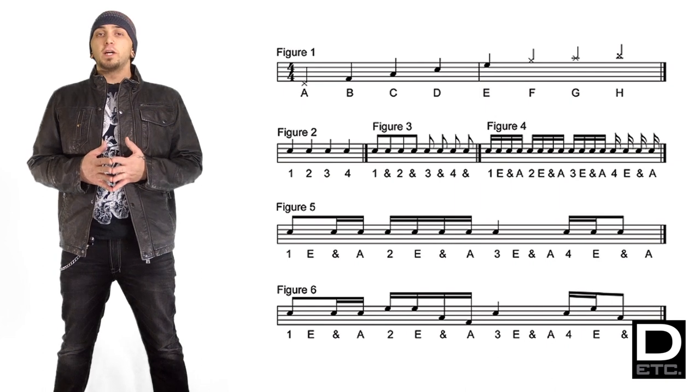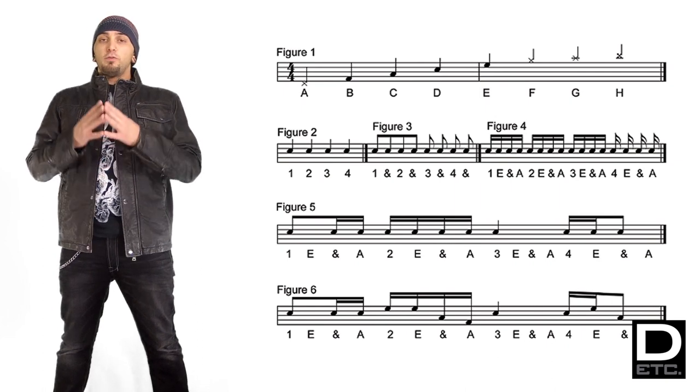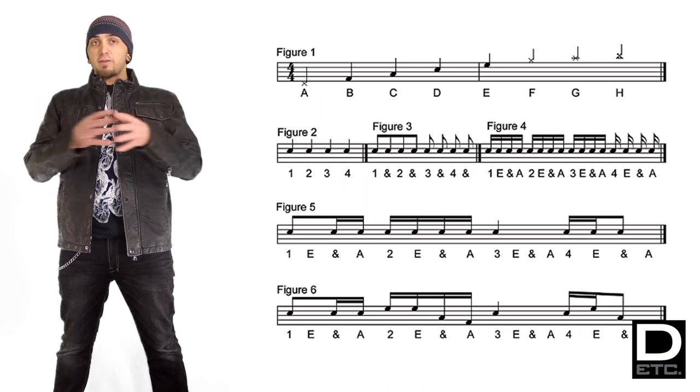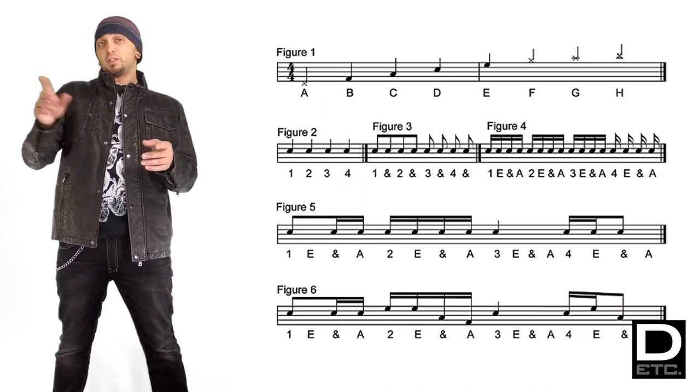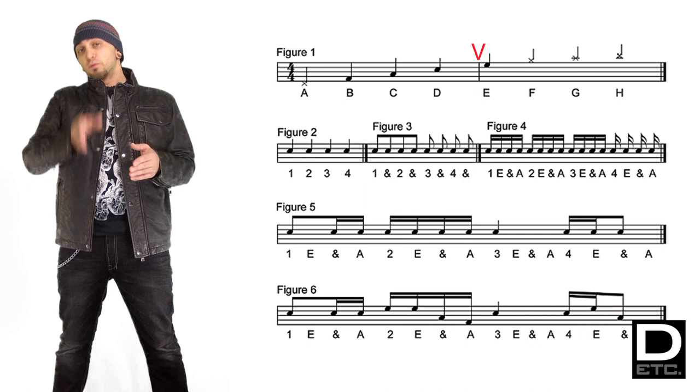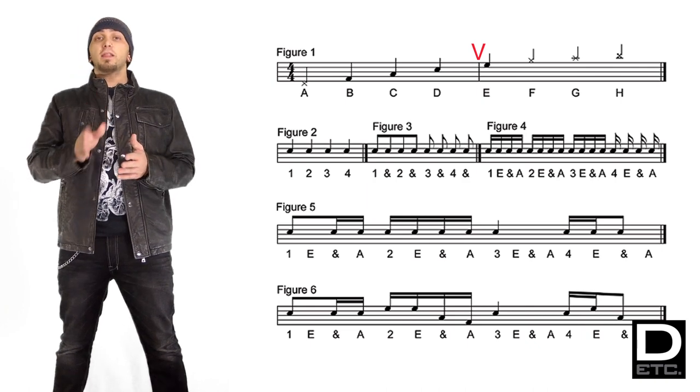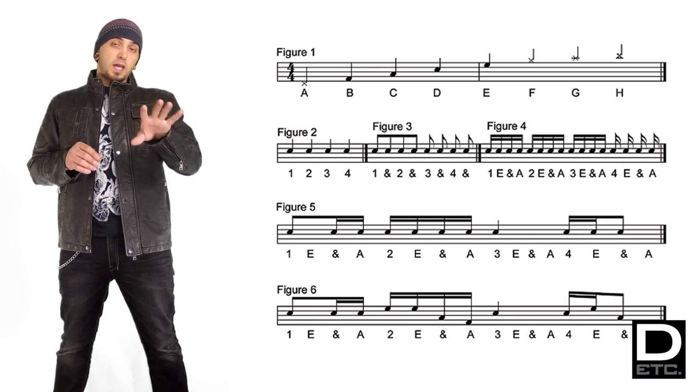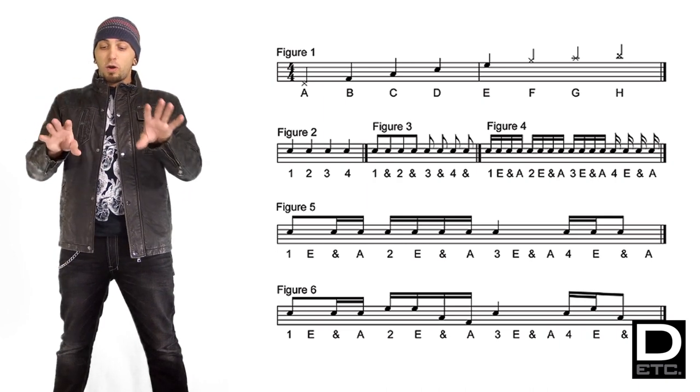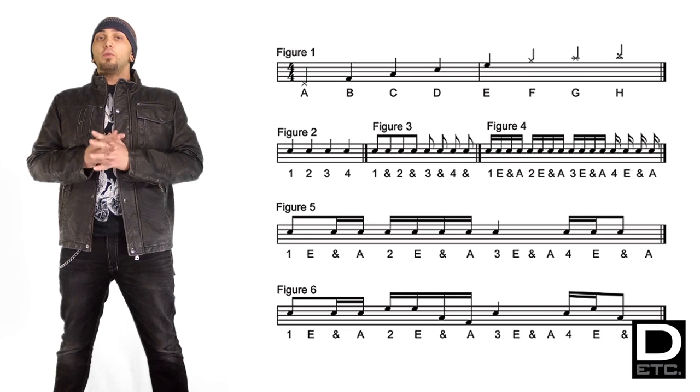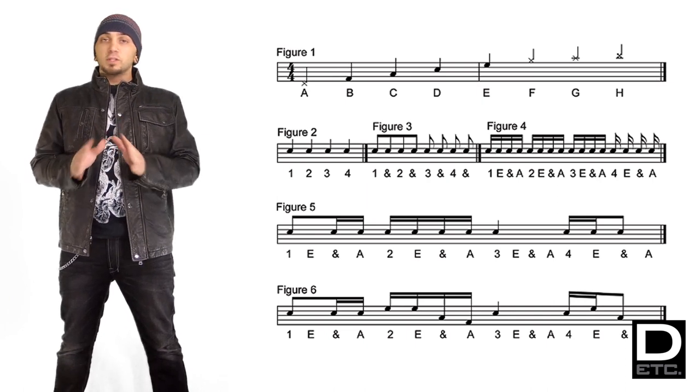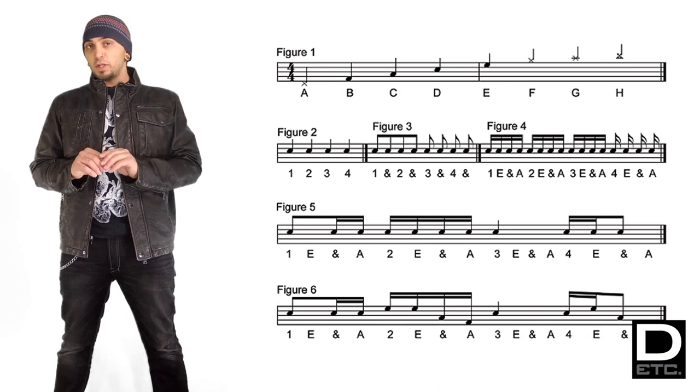The next thing we need to touch on is bars. You may have noticed in the previous exercise we had this long staff with five lines, four spaces, and a bunch of dots and X's. Right in the middle was a vertical line called a bar line, which meant that the first half is different than the second half. So we had two bars. The only thing you need to know right now is that it's in 4/4 time. We don't need to explain that yet, we can get into that a little bit later.